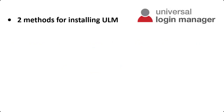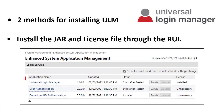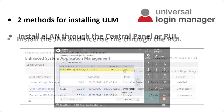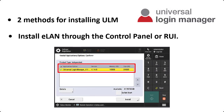There are two methods for installing ULM, and each will be demonstrated in this video. One method is to manually install the JAR and license file through the RUI. This method can be used by all generations of ImageRunner Advanced devices, and the JAR and license file is downloaded by the user before installation. The second method is to use a LAN number to install the application from the control panel or through the RUI, using the Content Delivery System, or CDS. The device will need internet access to download the JAR and license file and install the application. This video will also show how to uninstall ULM if the customer does not want to use it anymore.